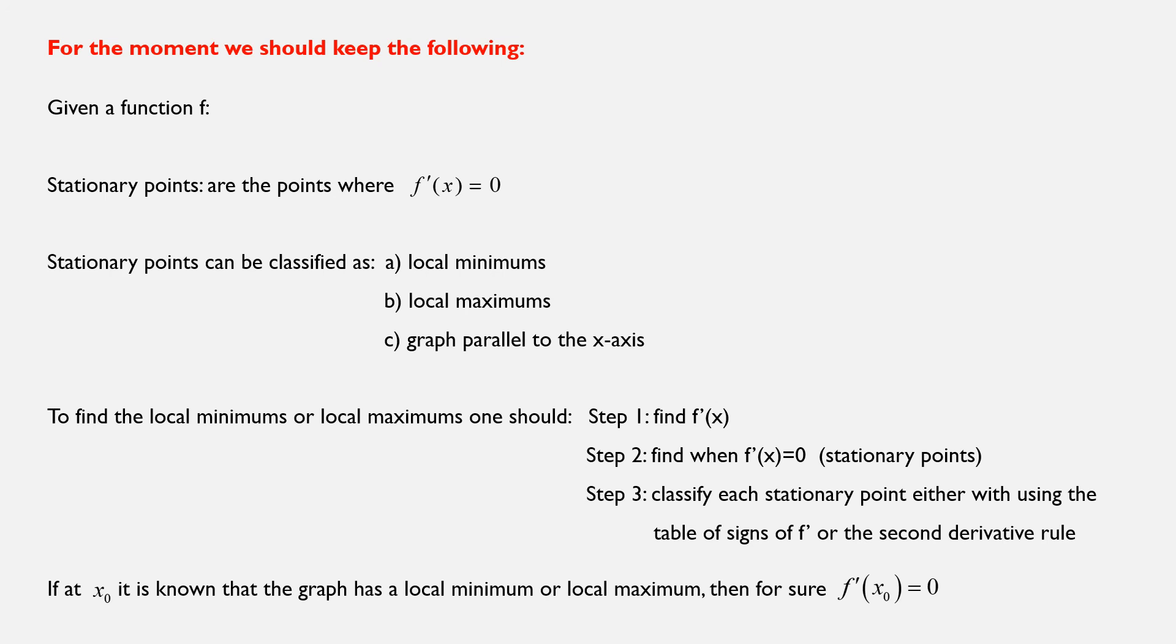Now, keep in mind that if we know that f'(x₀) is 0, then that could mean that either at x₀ we have a local minimum or a local maximum or nothing. But in the opposite direction, if it is known that at x₀ the graph has a local minimum or local maximum, then for sure the value of the derivative over there, f'(x₀), will be equal to 0.